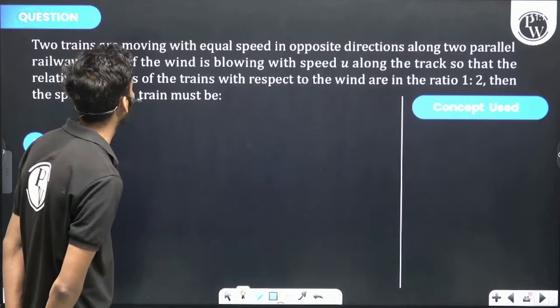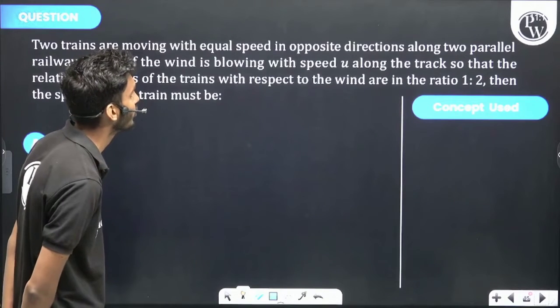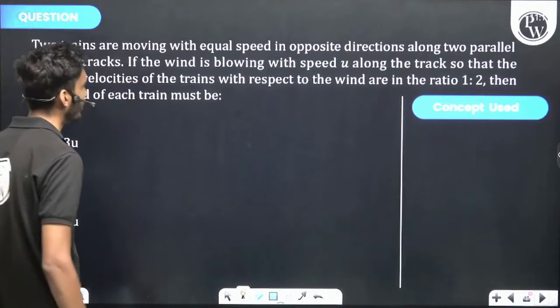so that the relative velocities of the trains with respect to wind are in the ratio 1:2, then the speed of each train must be: